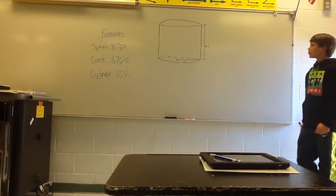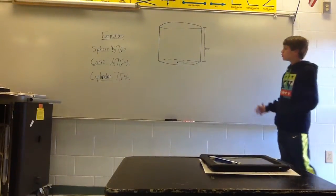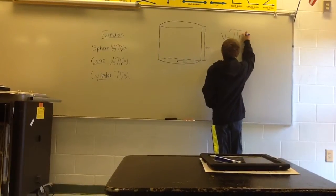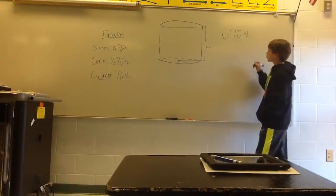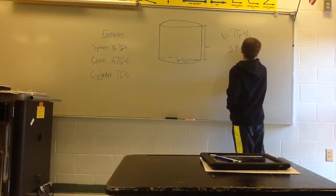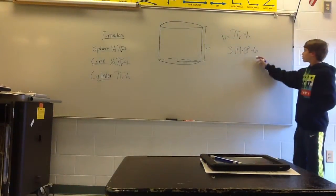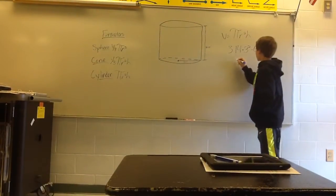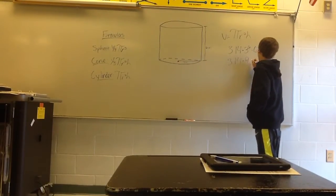For our third example, we're going to find the volume of a cylinder. The formula you'll use is V equals pi r squared times height. Fill in your formula: you have 3.14 times 3 squared times 6. So 3 squared is 3 times 3, which gives you 9. Now you have 3.14 times 9 times 6.